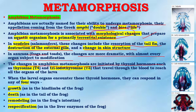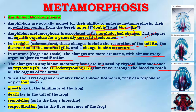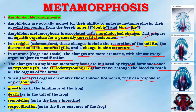Changes in amphibian metamorphosis are initiated by thyroid hormones such as thyroxine (T4) and triiodothyronine (T3), which travel through the blood to reach all the organs of the larva. When larval organs encounter these thyroid hormones, they can respond in four ways: number one is growth, as in the limbs of the frog; number two is death, as in the tail of the frog; number three is remodeling, as in the frog's intestine; and number four is re-specification, as in the liver enzymes of the frog.